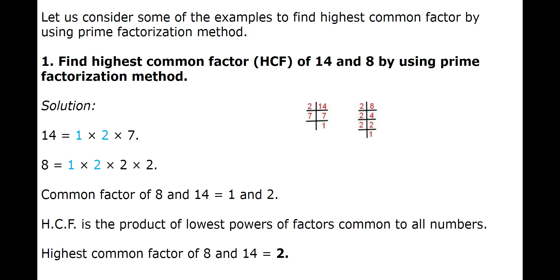We'll do this with the help of three examples. In the first example, we'll find the highest common factor of 14 and 8 by using the prime factorization method.